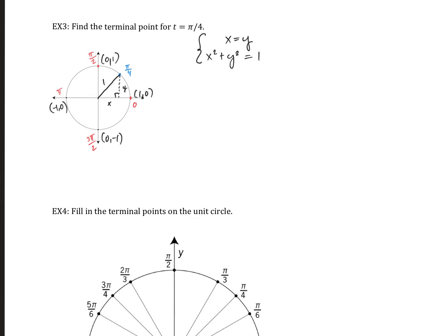In some ways this is a system — we can use substitution. We could either find x or y first; it doesn't actually matter here. I'm going to go ahead and find y first. We know that x = y, so let's go ahead and substitute that y value in. We've replaced x² with y², so now we have 2y² = 1. Solving for y: divide both sides by 2, and we get y² = 1/2.